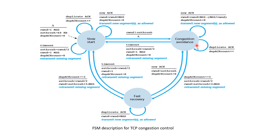Now, if there is any duplicacy in acknowledgements, it gets counted, and if the duplicate count equals 3, it shifts into fast recovery mode. In fast recovery, a decision is made whether there is a timeout, a new ACK, or duplicacy in ACKs. If there are new ACKs it goes into congestion avoidance state; if there is a timeout, slow start begins again; if there is duplicacy in ACKs, the congestion window is simply increased by MSS.